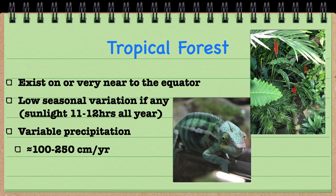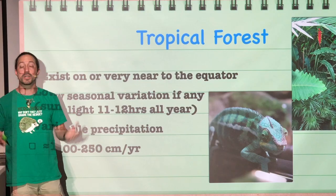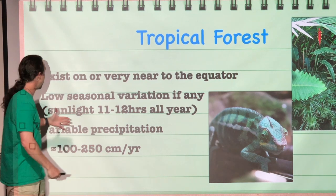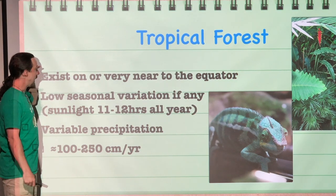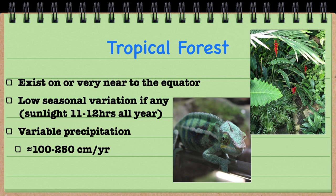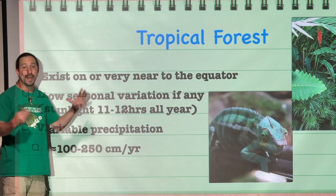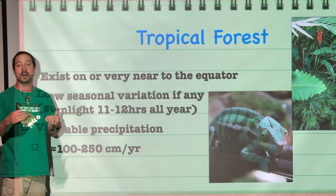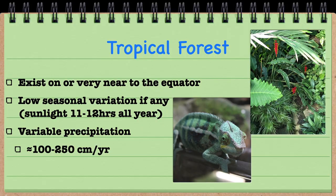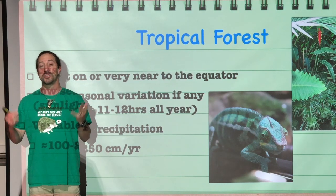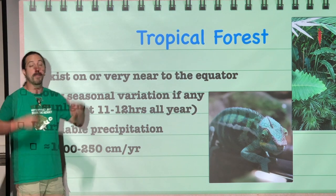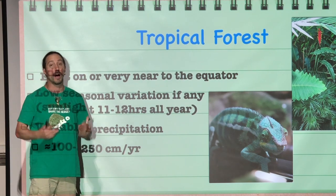Moving on, we get to the tropical forests. Some of these forests are tropical rainforests, which exist very near to the equator — that is why they are tropical. They have low seasonal variation because the sunlight stays stable essentially the entire year at 11 to 12 hours of sunlight every day. The precipitation varies between 100 and 250 centimeters a year, so there's a lot of variability in how much rainfall these forests get, but they receive plenty of rainfall to support a lot of plant life.